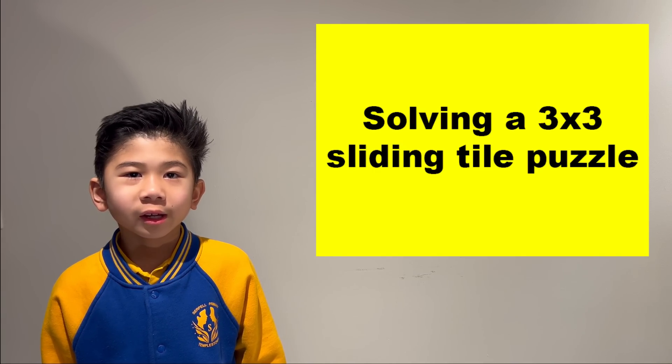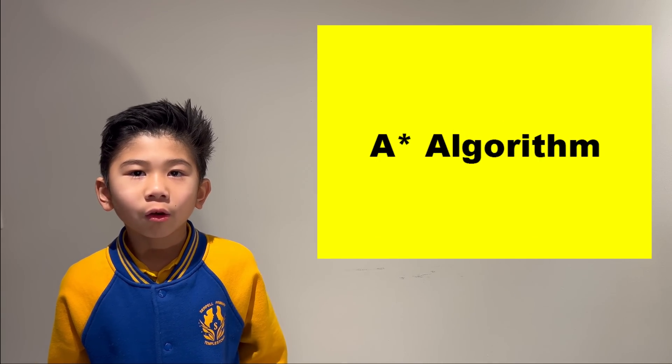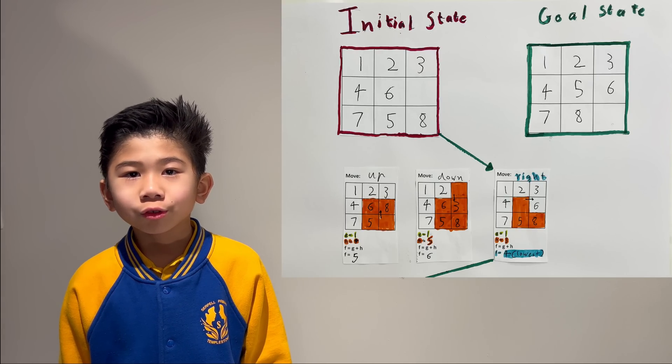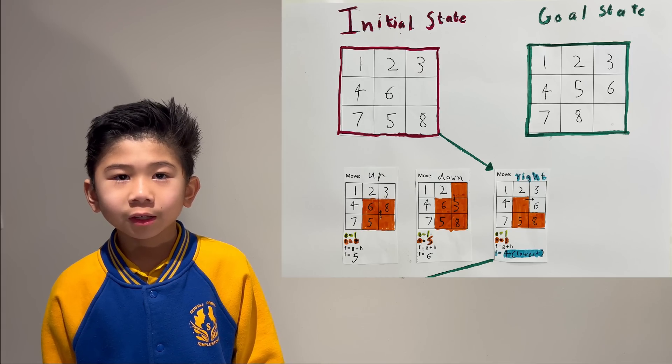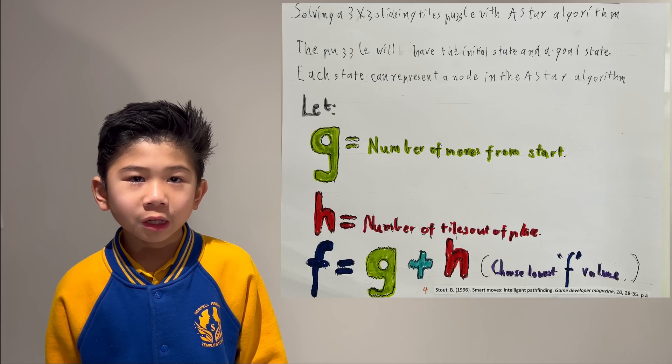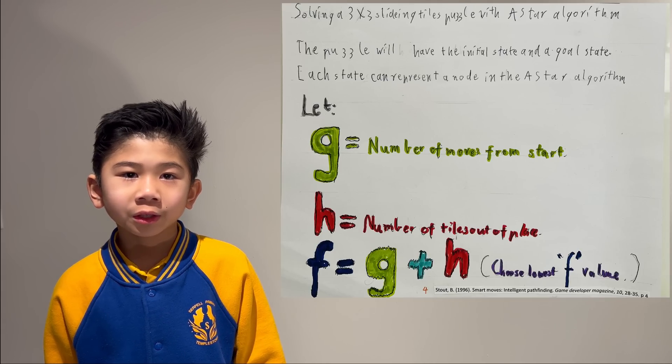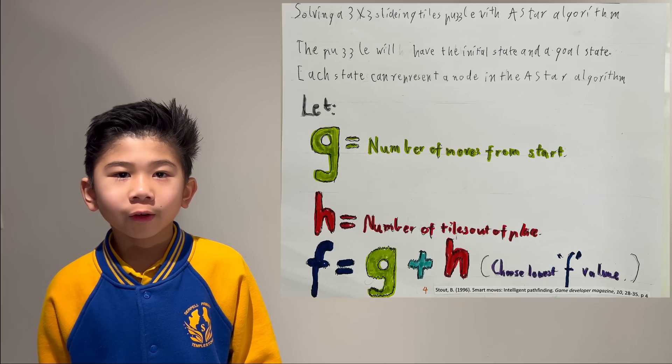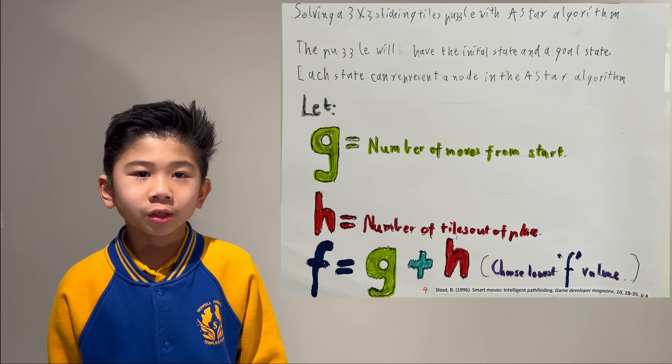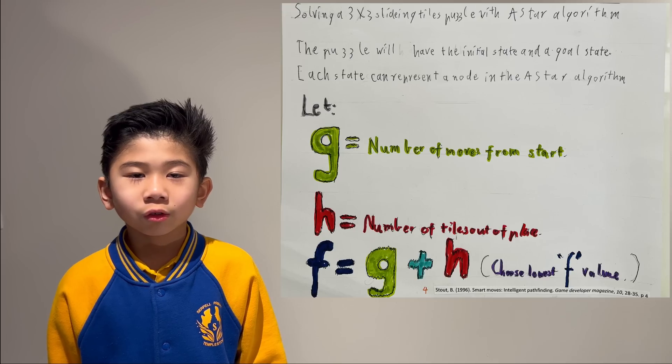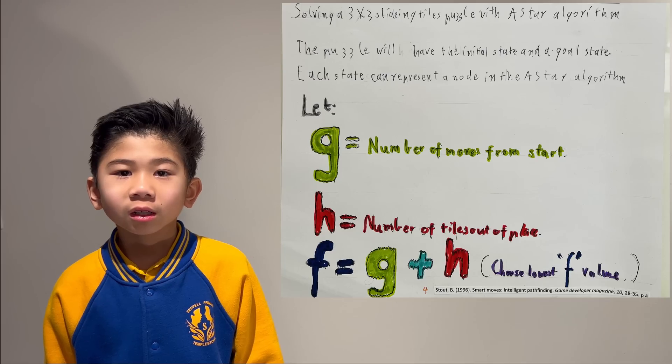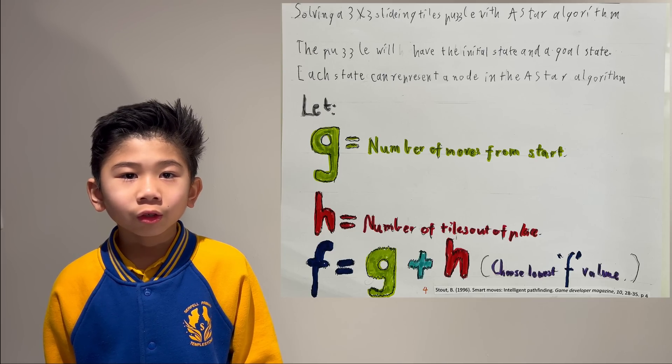Solving a 3x3 sliding tiles puzzle with A-star algorithm. The puzzle will have the initial state and a goal state. Each state can represent a node in the A-star algorithm. Let G equal to the number of nodes from the start. H equal to the number of tiles out of place compared to the goal state. And F, the heuristic function, is equal to G plus H. We would choose the path with the least F value and repeat until the goal state is found.